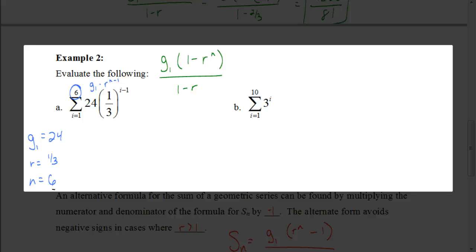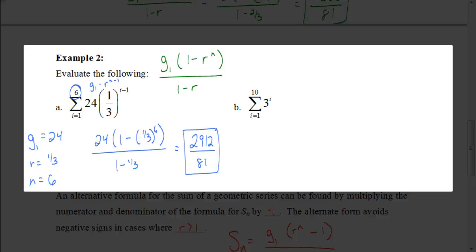Pause the video and plug that information into your formula now to get your answer. You should have gotten 2,912 divided by 81. Your first term is 24, your value for r is 1 third — don't forget it's 1 third to the 6th power. Make sure you're using parentheses properly if you're not getting the correct answer. That's why it's important to show your work.